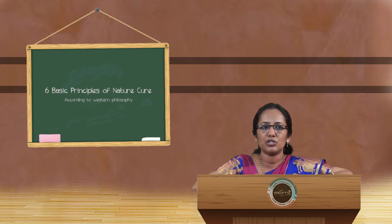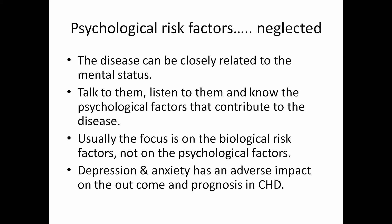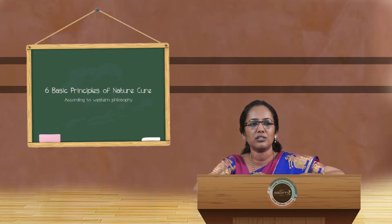The second point, Tolle Totem, means treating the person as a whole — a holistic approach to treatment. Parts cannot exist independently of the whole; they are in intimate connection. This concept emphasizes treating the whole person, not just the disease. Doctors today are often trained to treat the body as compartments without considering psychological and socioeconomic risk factors. The disease can be closely related to the mental status of the patient.